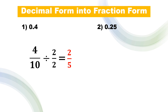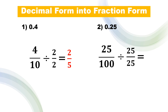Number 2: we have 0.25. Get the place value of 25 — tenths, hundredths — so 5 is in the hundredths place. This becomes 25 over 100. Get the GCF and divide: 25 divided by 25 is 1, and 100 divided by 25 is 4. Therefore, the fraction form of 0.25 is 1 over 4.